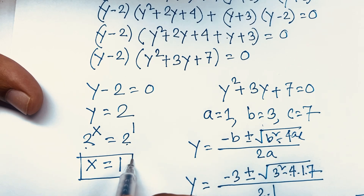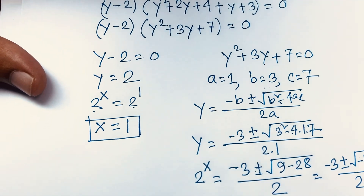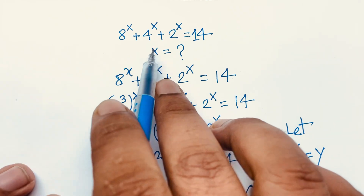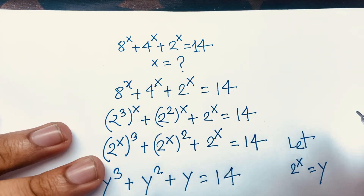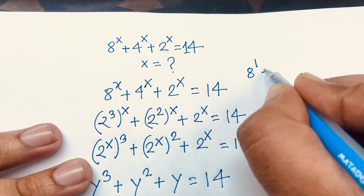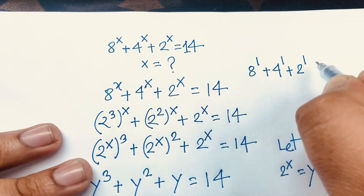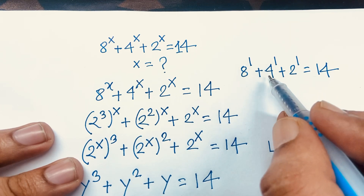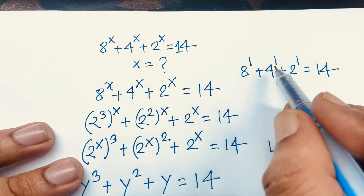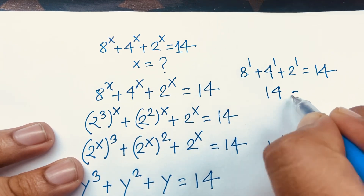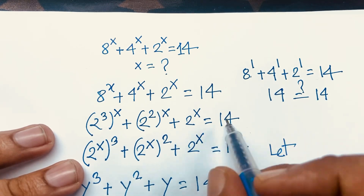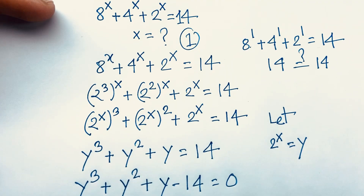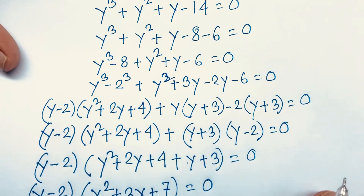This is our final answer. Let's verify: 8 to the power x plus 4 to the power x plus 2 to the power x equals 14. Substituting x equals 1, we get 8 to the power 1 plus 4 to the power 1 plus 2 to the power 1, which is 8 plus 4 plus 2, equals 14. Yes, 14 equals 14, so x equals 1 is our correct answer. Thank you all. If you enjoyed this video, please subscribe to my channel and like this video for more interesting videos. Goodbye, take care.